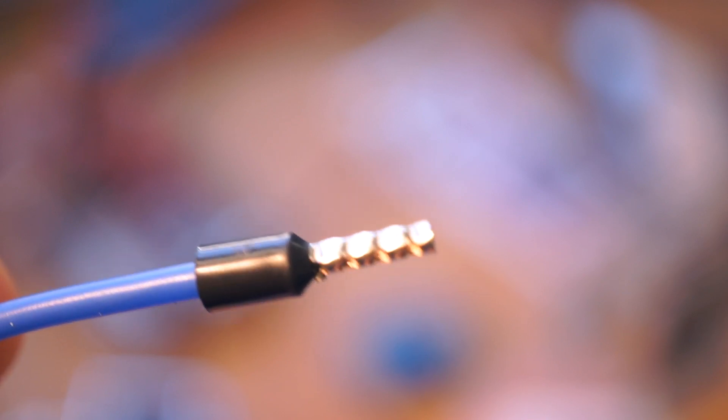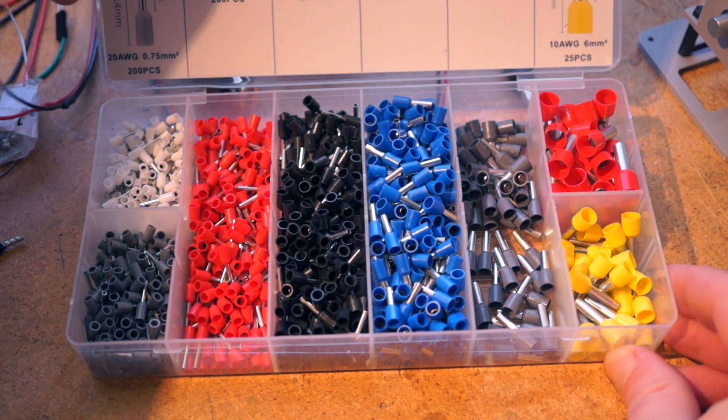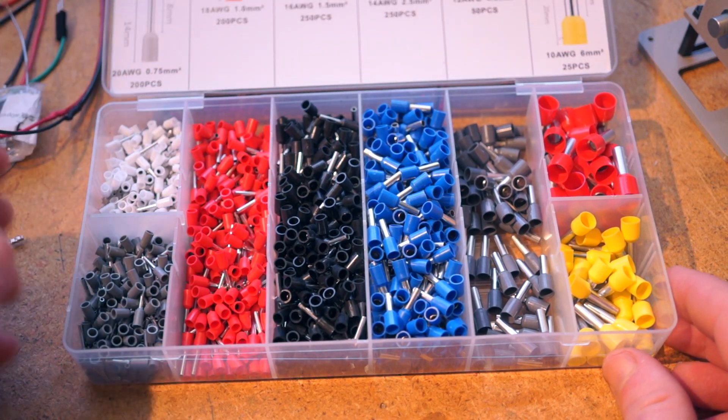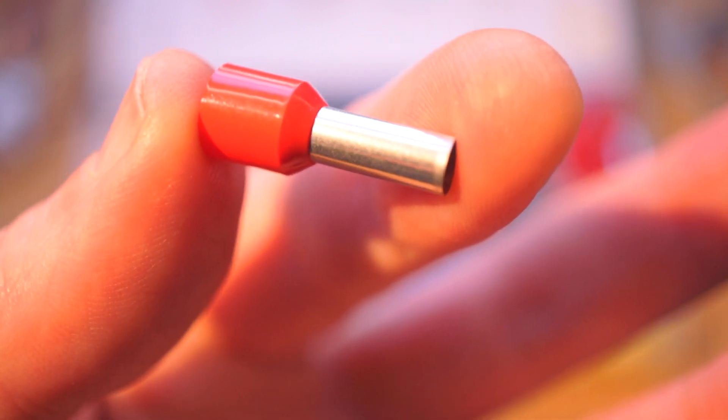They come in all different sizes that are fitted for the specific gauge of stranded wire that you're using. This kit goes all the way down to the 22 gauge wire that I'll typically use on electronics, all the way up to 7 gauge.